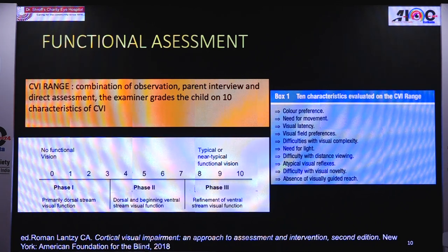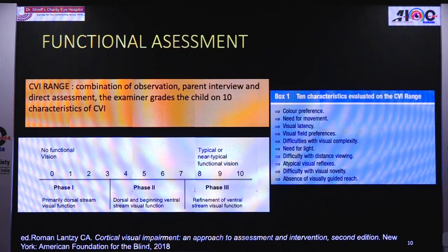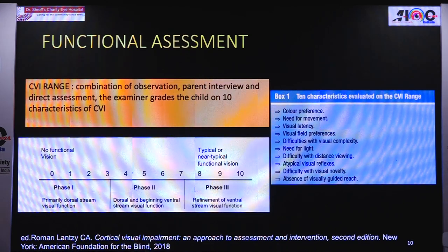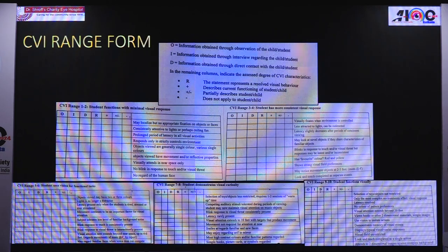Roman Lanzi described a parameter called the CVI range with scores from 1 to 10, focusing on 10 things: colour preference, need for movement, visual latency, visual field preferences, difficulty with visual complexity, need for light, distance viewing or atypical visual reflexes, visual novelty, and absence of visually guided reach. These are the 10 major parameters of the CVI range questionnaire, assessed by observing the child, interviewing regarding the child's behaviour, and through direct contact with the child in the clinic.